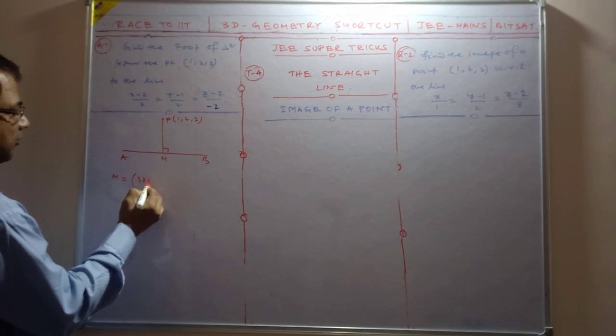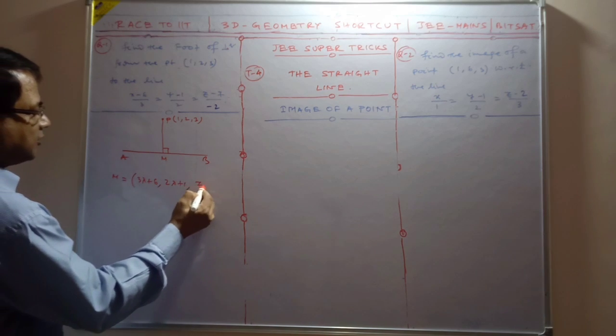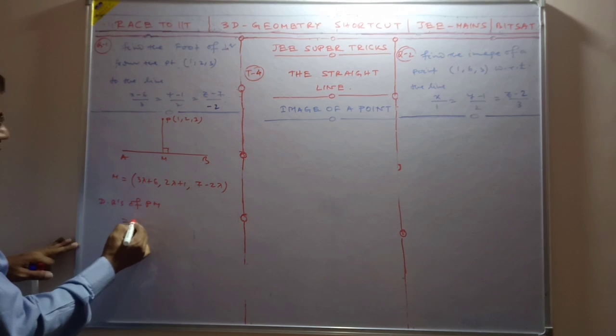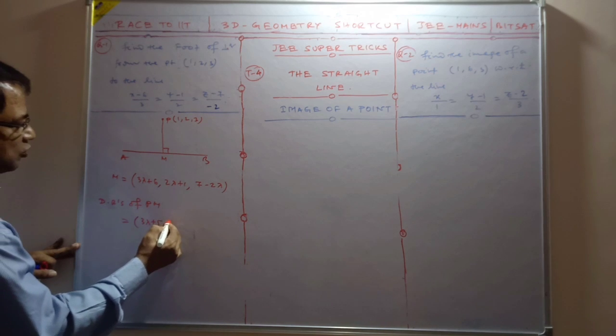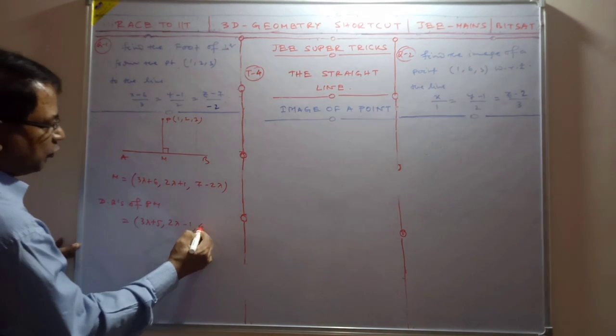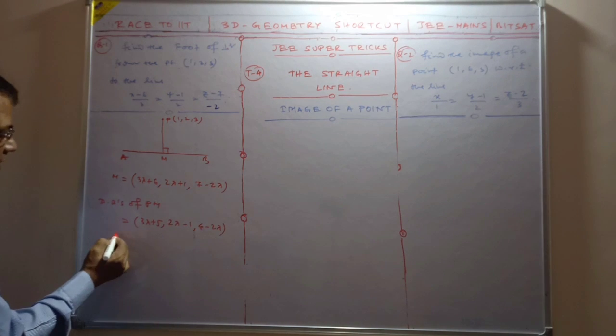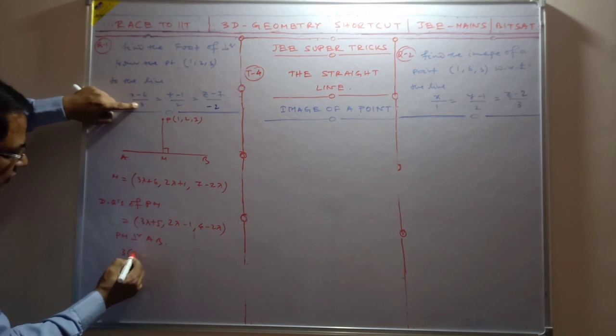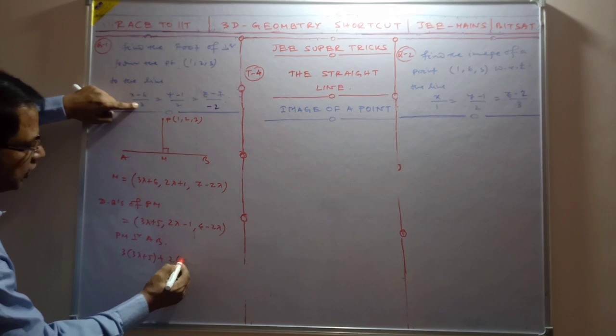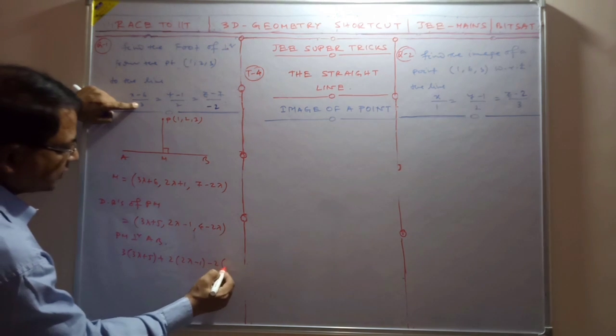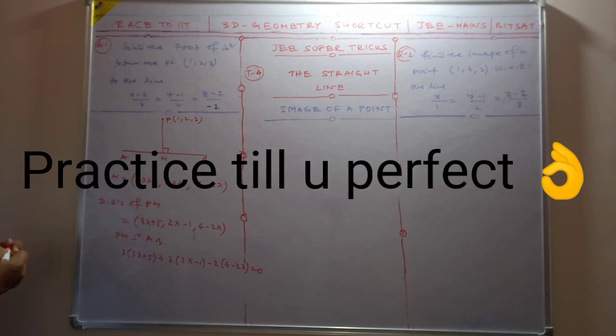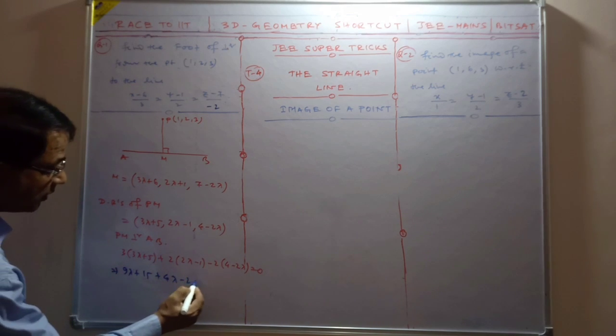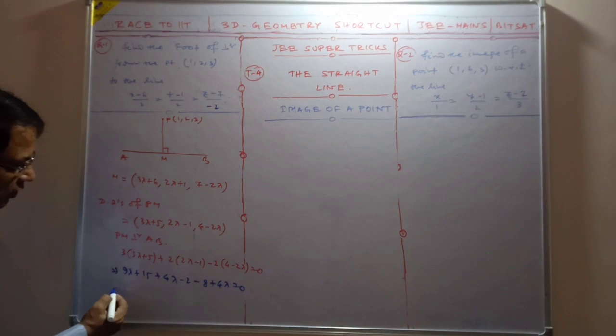So that is 3 lambda plus 6, 2 lambda plus 1, 7 minus 2 lambda. Direction ratios of PM are 3 lambda plus 5, 2 lambda minus 1, and 4 minus 2 lambda. Using the condition of perpendicularity, this equals zero. So 9 lambda plus 15 plus 4 lambda minus 2 minus 8 plus 4 lambda equals zero.